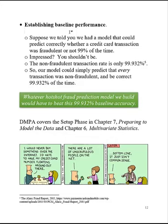Suppose I told you that we had a model that could predict correctly whether a credit card transaction was fraudulent or not 99% of the time — my model for predicting fraud is 99% accurate. You shouldn't be impressed by this model, because the non-fraudulent transaction rate is 99.932% according to the Alaric Fraud Report, and this is a real-world statistic.